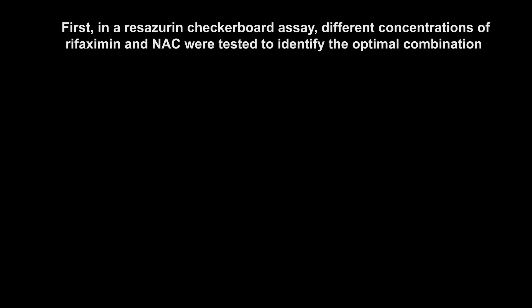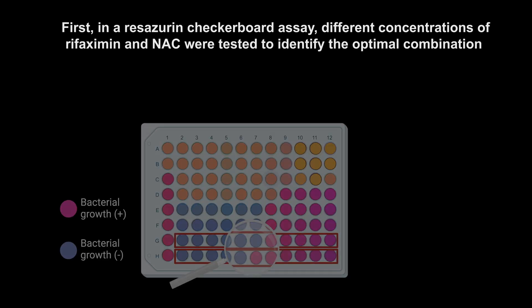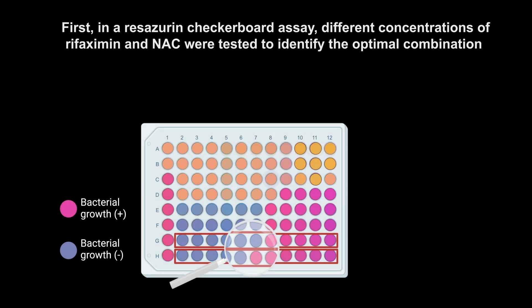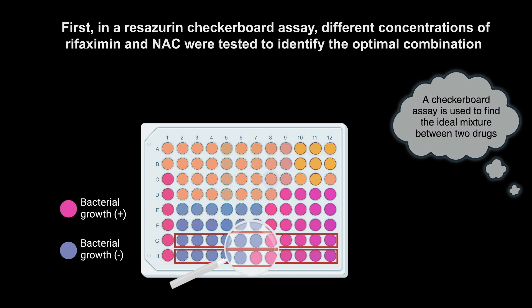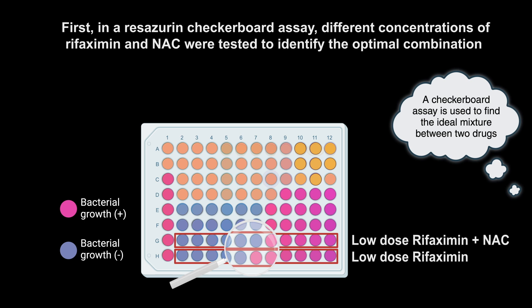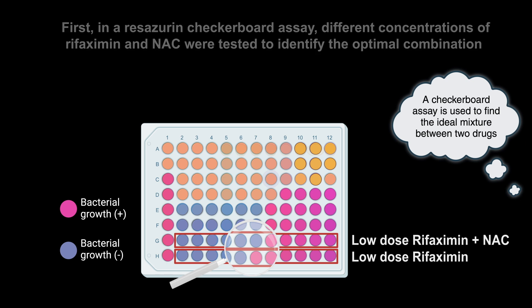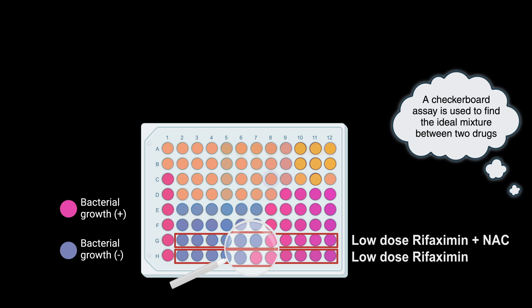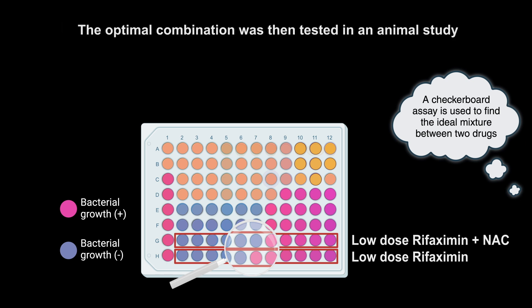First, in a resazurin checkerboard assay, different concentrations of Rifaximin and NAC were tested to identify the optimal combination. The optimal combination was then tested in an animal study.